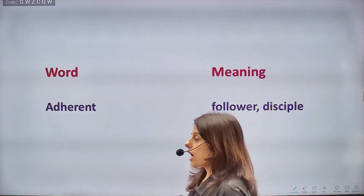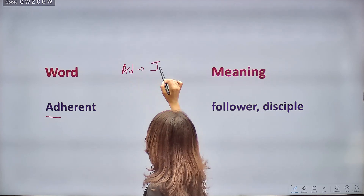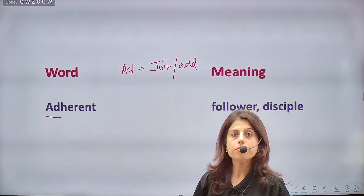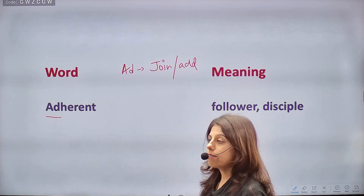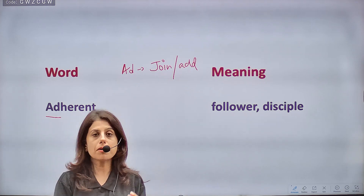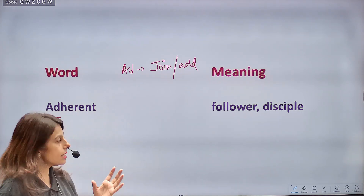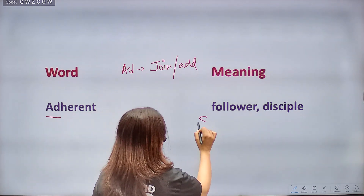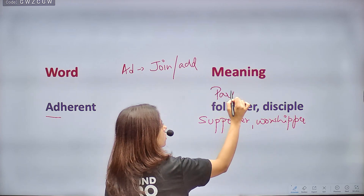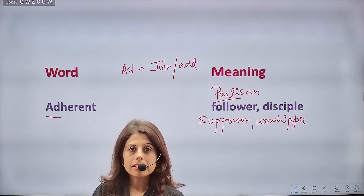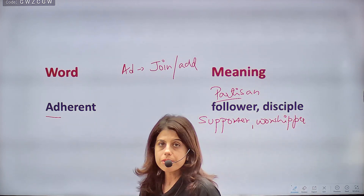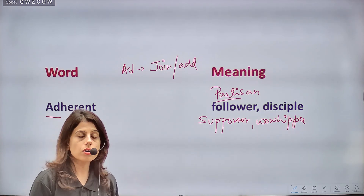The next word is ADHERENT. Root word 'ad' means to join or add — like 'addition'. So adherent basically means a follower. When you follow someone — whether a political party, a god, a belief, a guru, a saint — you are an adherent. Synonyms: follower, disciple, supporter, worshipper, devotee, partisan. Words containing 'ad' generally carry the meaning of joining, like 'adjunct' which also means joined or added.